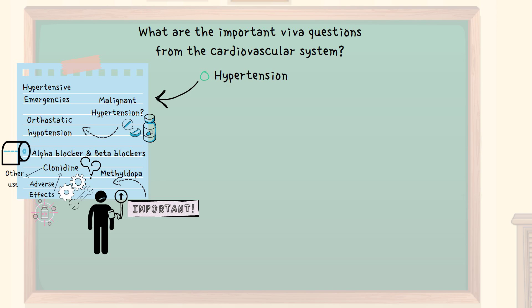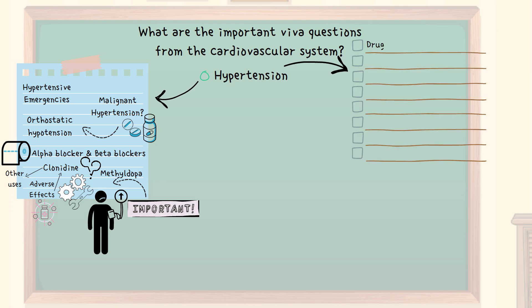What are the other clinical uses of clonidine apart from hypertension? Which drugs are used as vasodilators in the treatment of hypertension? What is the difference between oral and parenteral vasodilators?